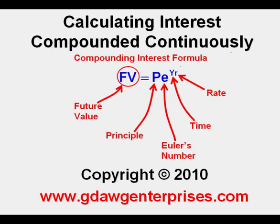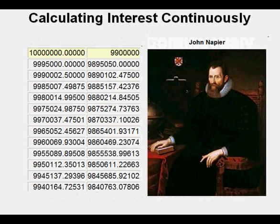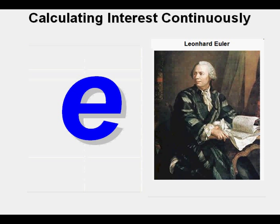Calculating Interest Compounded Continuously. In 1614, Scottish mathematician John Napier published tables of natural logarithms that included the irrational number later to be called e, approximately 2.71828. The table shown is a small portion of page 3 of Napier's Tables of Logarithms. This constant, later named e after the Swiss mathematician Euler, is like pi — a ratio that appears often in mathematics.